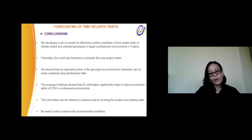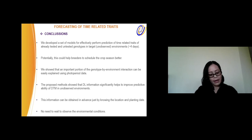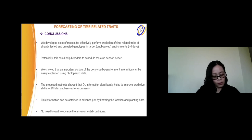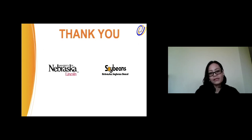In conclusion, we developed a set of models for effectively performing prediction of time-related traits for already tested and untested genotypes in target environments, within plus or minus 4 days. We think this could potentially help breeders to schedule the crop season better. We showed that an important proportion of the genotype-environment interaction can be easily explained using photoperiod data. The proposed methods show that daylength information significantly helps to improve the prediction of days to maturity in soybeans in unobserved environments. This information can be obtained in advance because you only need to know the location and the planting date, with no need to wait to observe all the environmental conditions. That is all I have — thank you so much for your attention. I am happy to answer any questions.